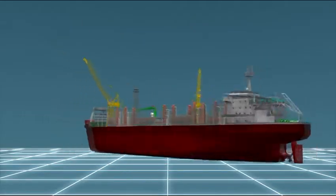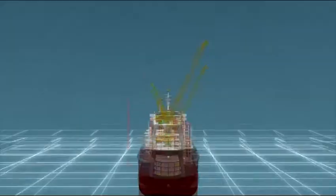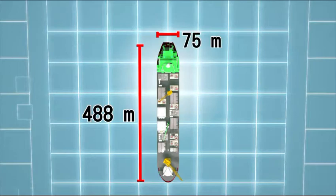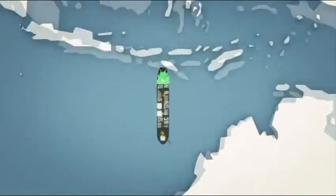Shell's Prelude FLNG vessel measures 105 meters tall, 75 meters wide and 488 meters long. It will be anchored about 200 kilometers off Australia's northwest coast.